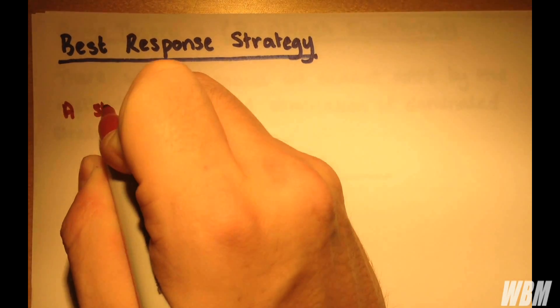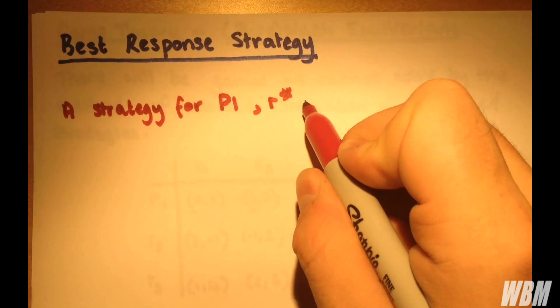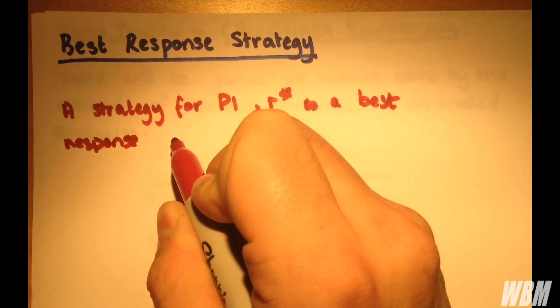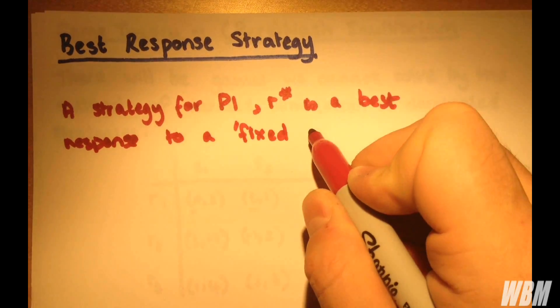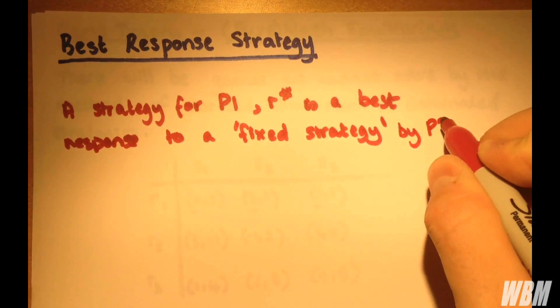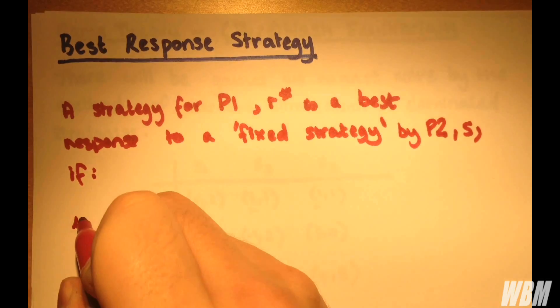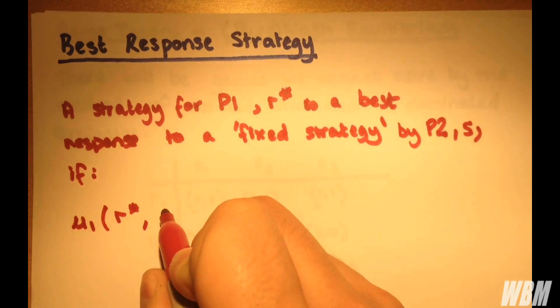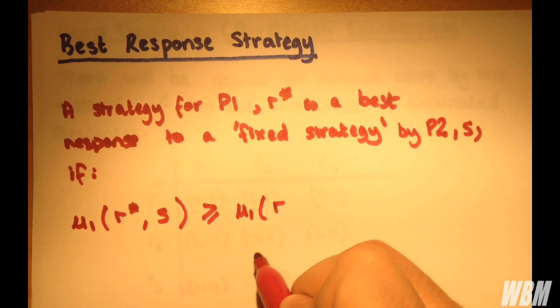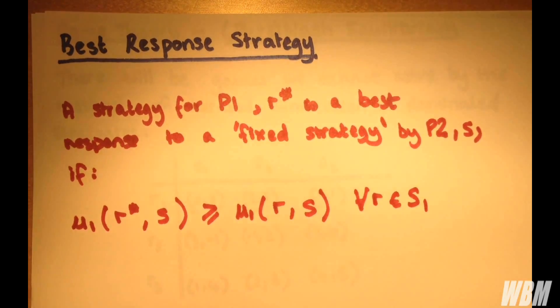So a strategy for player 1, R asterisk, is a best response to a fixed strategy by player 2, which we obviously will have as S, if U1 for R asterisk and fixed S is, again, greater than or equal to U1 for any other value of R at the same S. So I think this is making quite a lot of sense.